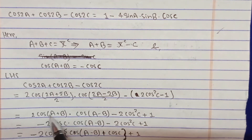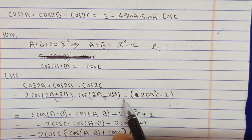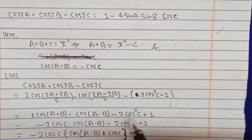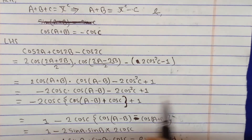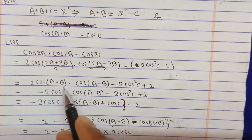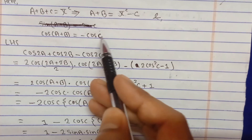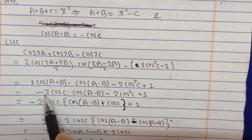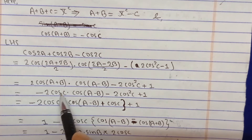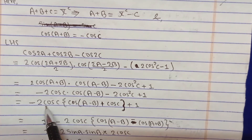Combining these, the LHS becomes 2cos(A+B)cos(A-B) minus 2cos²C plus 1. Since cos(A+B) equals minus cosC, we substitute to get minus 2cosC times cos(A-B) minus 2cos²C plus 1.